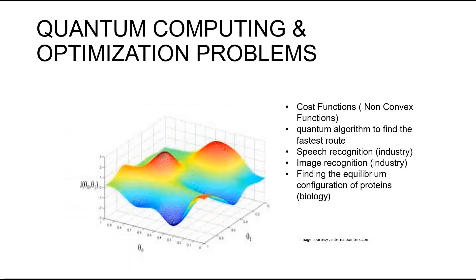In machine learning, we compute the cost function by summing over the square of the difference of the observed and the expected values for the entire set, to arrive at a cost or loss value for each training data set run against the model.